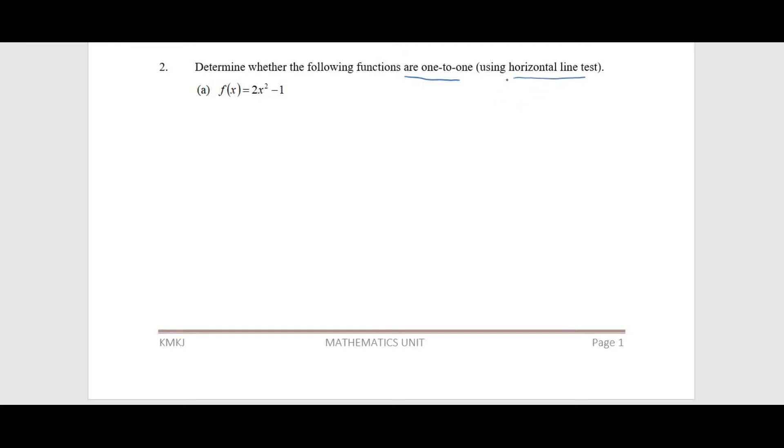If we get this type of question, you have to sketch this graph first, then only you can draw the horizontal line. So how to sketch this graph? We have f(x) = 2x² - 1. We find the x-intercept first.